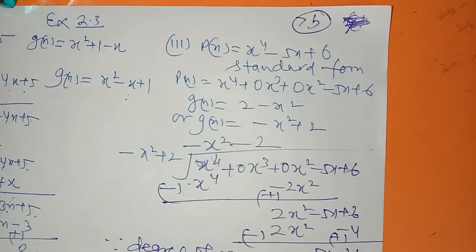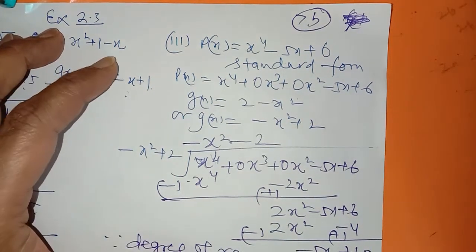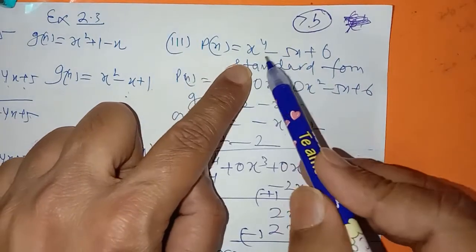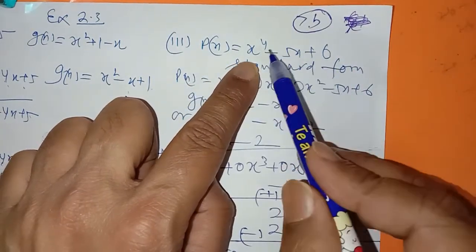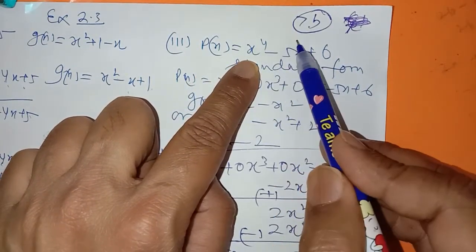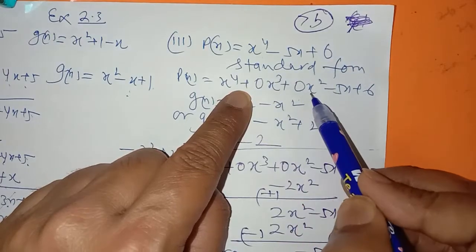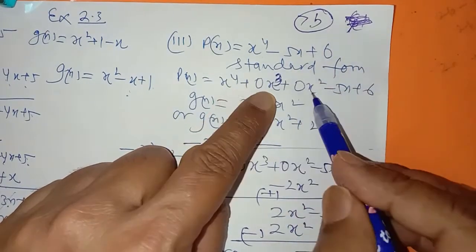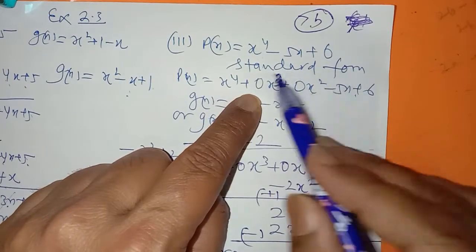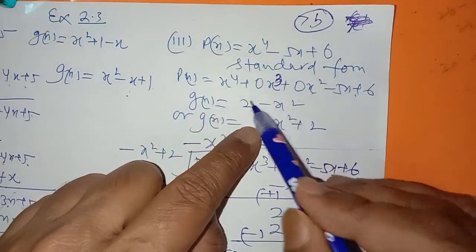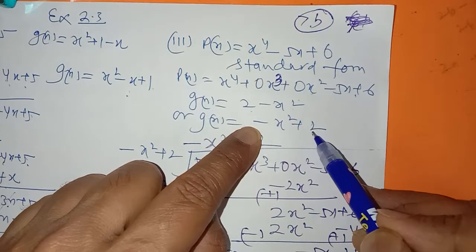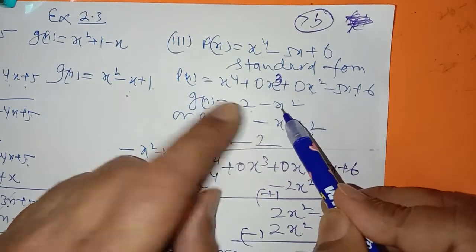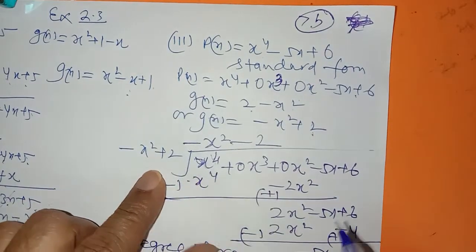To start the division you should write the polynomial in standard form. In the third part, we have x to the power 4 minus 5x plus 6. There is no cube or square term, so write: x⁴ plus 0x³ plus 0x² minus 5x plus 6 — now it is in standard form. We have to divide by 2 minus x², so write it as minus x² plus 2 in standard form — decreasing power of x. This is the dividend and this is the divisor.